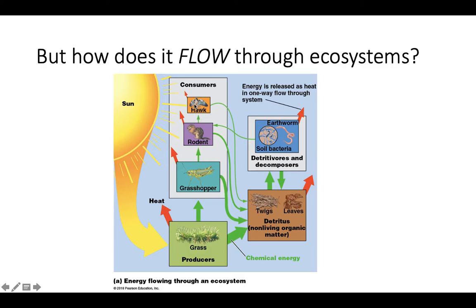A hawk would eat that rodent and get some energy — that's a tertiary level consumer. All of these things when they die, along with things like twigs and leaves, are still biotic and therefore can get broken down by decomposers like worms, bacteria, and fungi. So some of that energy will actually cycle a little bit, but all of the matter will cycle. You might notice some energy is being lost here — these red arrows being lost as heat. I'll get to that in a little bit.